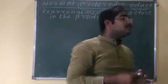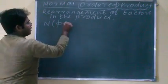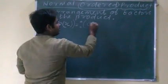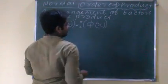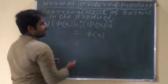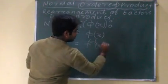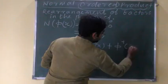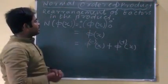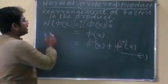According to that definition, we can write the operation N of φ(x), which equals the normal product of φ(x). Since φ(x) can have both positive and negative energy terms, I write the negative energy term first, then the positive energy term. This is equation 1.